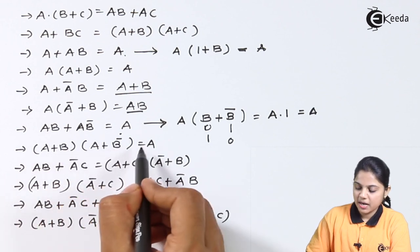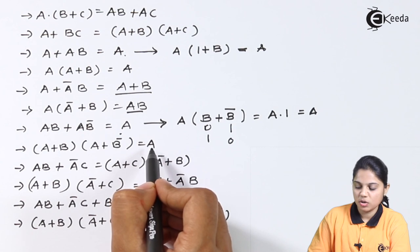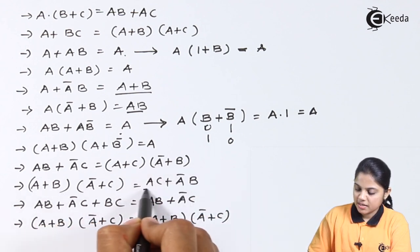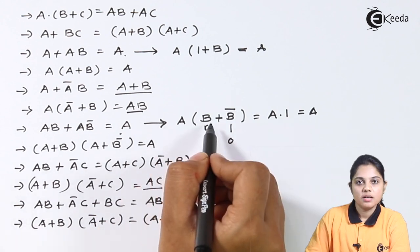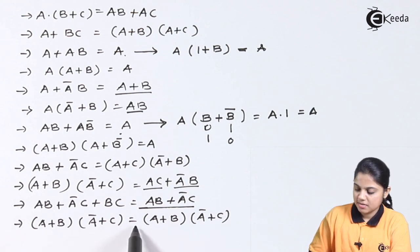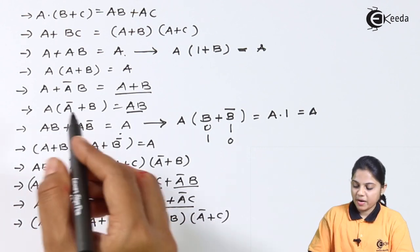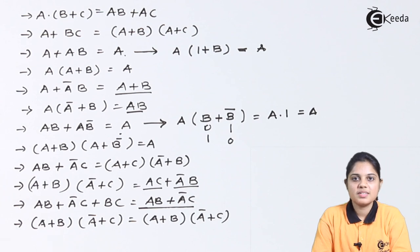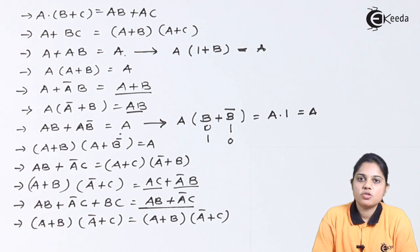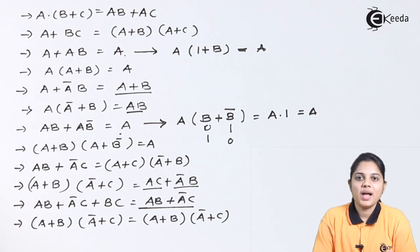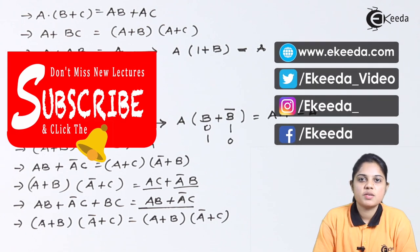A plus B into A plus B-bar can be simplified to give output equal to A. AB plus A-bar·C can be written as (A plus C)(A-bar plus B). (A plus B)(A-bar plus C) equals AC plus A-bar·B. AB plus A-bar·C plus BC equals AB plus A-bar·C. You can go through good articles to see how these Boolean expressions are derived, as these are already standard derived expressions. You can use these standard equations to simplify logic diagrams in upcoming videos. I hope you have understood what Boolean algebra is and what expressions can be used to analyze different logic gates. Thank you for watching. Stay tuned to Ekeda, do subscribe. Thank you.